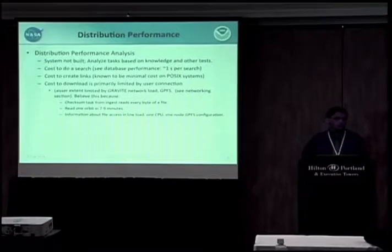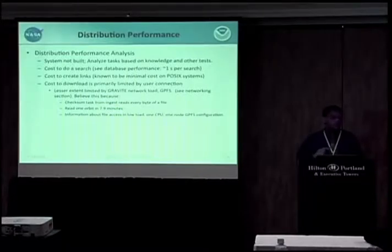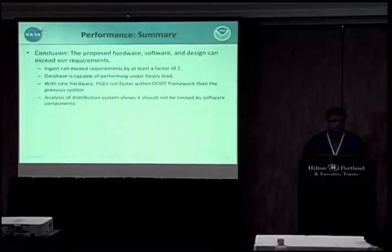We don't have a distribution system yet. So about all we can really do for a distribution system is effectively assert we think it will be okay because we've analyzed the pieces along the way. We know how long it costs to do a search. We know how long it costs to create links. We know how fast our system roughly is to read the files because a checksum is effectively going to do the exact same thing as it does to copy out all the data. So we think that we can meet our distribution requirements for the user community but we're not going to be absolutely certain about that until we build the system out.